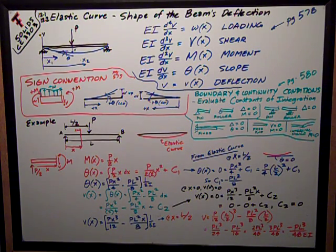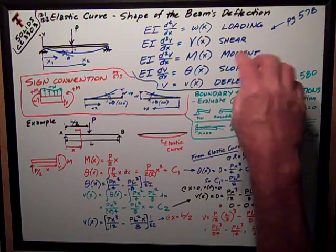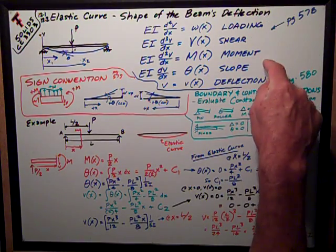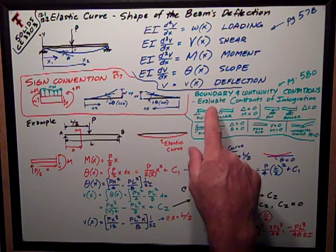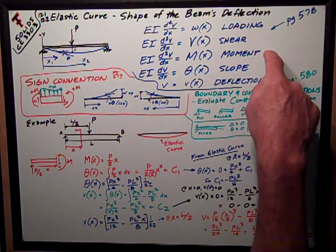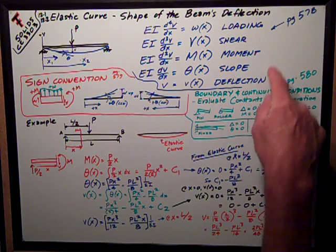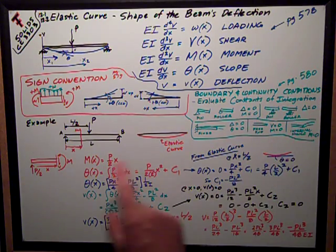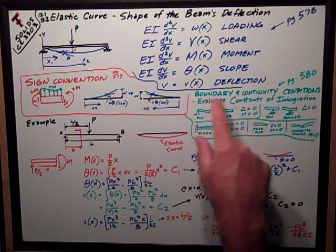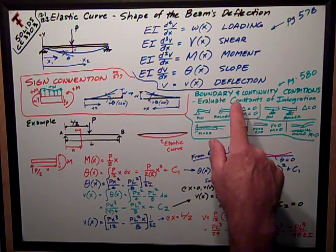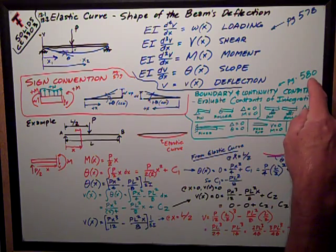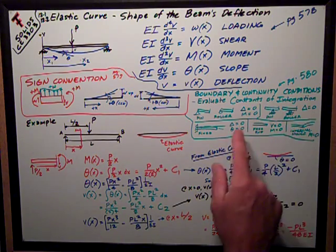Okay, so I'm going to develop these equations and integrate them to get to deflection. But remember, every time I integrate, if I integrate my moment equation, I'm going to introduce some constants that we'll see in this example and examples in the book. So I have to use boundary conditions or continuity conditions to evaluate those constants of integration.